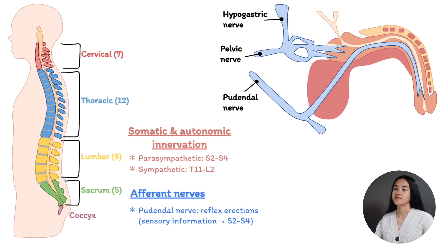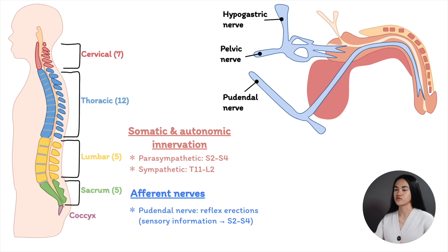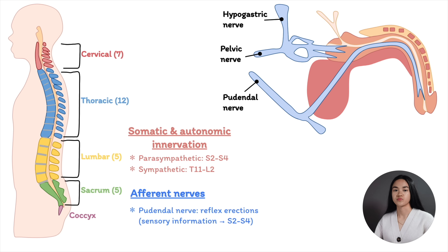There are three types of erection: nocturnal, which follows REM sleep (rapid eye movement); reflexogenic, from genital stimulation; and psychogenic, arising from multiple stimuli.